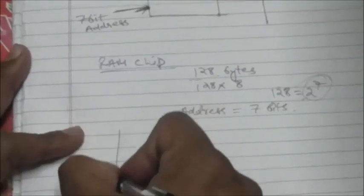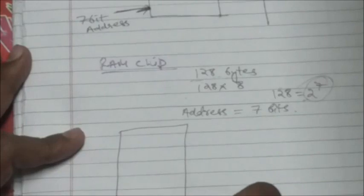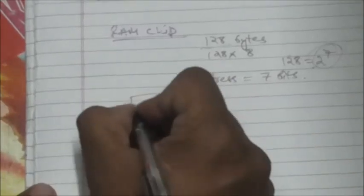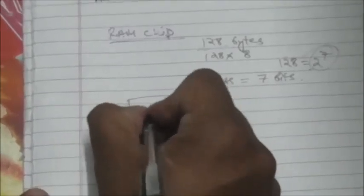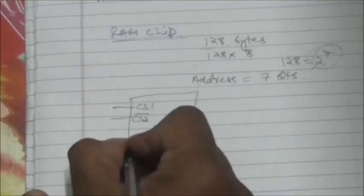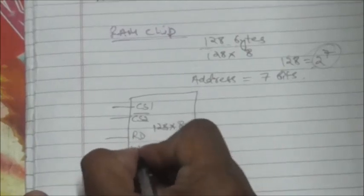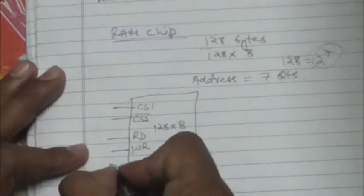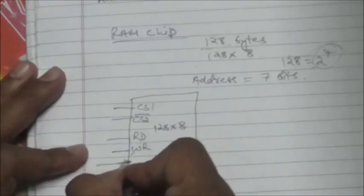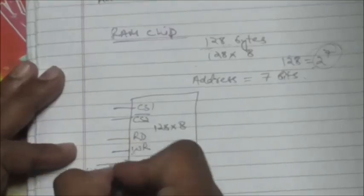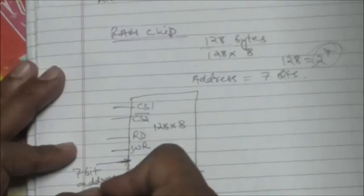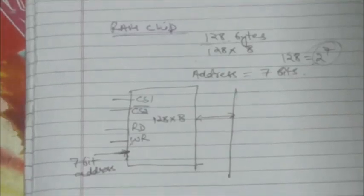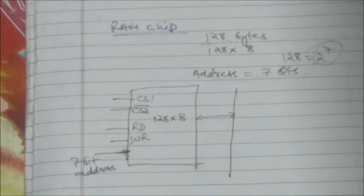Here is the RAM chip diagram. This chip is capable of storing 128 bytes. It has two chip select inputs: CS1 and CS2-bar. It has one read input line (RD) and one write input line (WR), and it has a 7-bit address input.